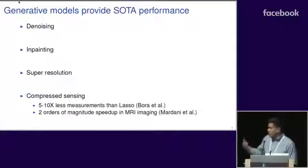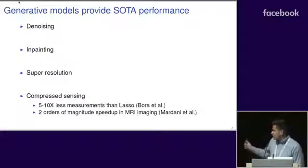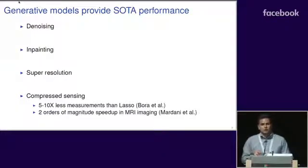They've also shown great performance in compressed sensing. Results from Bora et al. from UT Austin show that you can actually recover images with five to ten times less measurements than sparsity-based methods such as LASSO. In addition, Mardani et al. showed that you can do MRI imaging with a speed-up of two orders of magnitude, utilizing GPUs and convolutional nets.